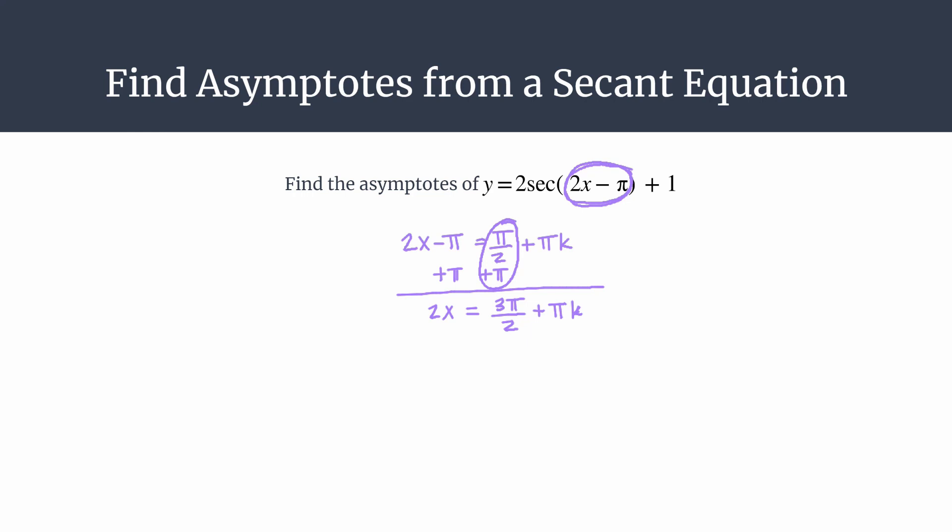Okay, so now all we have to do is divide both sides of the equation by 2, and that'll isolate x. So let's do that, making sure we divide every term by 2 or multiplying by 1 half, if that helps you. All right, so we have x equals 3 pi over 4 plus pi over 2k. This is our asymptote generating equation. It'll give us all the vertical asymptotes for our above equation.